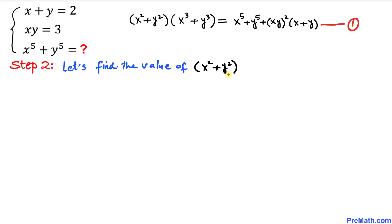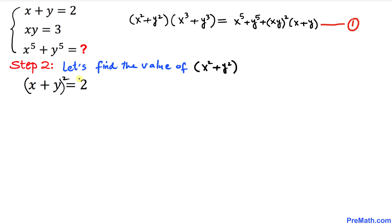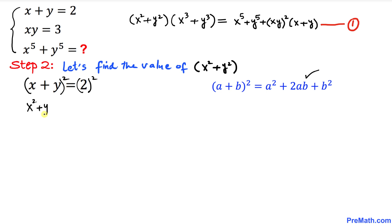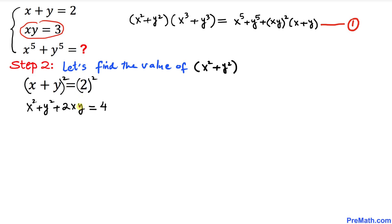Let's find x square plus y square. Starting from x plus y equals 2, we take the square of both sides and expand using the formula (a+b)² = a²+2ab+b². This gives us x square plus y square plus 2 times xy equals 4.